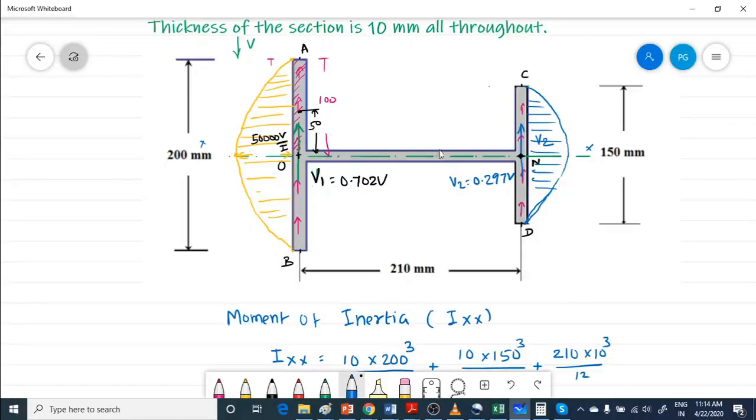V1 is upwards, V2 is upwards, V is downwards. So V1 plus V2 is equal to V, that is satisfied.